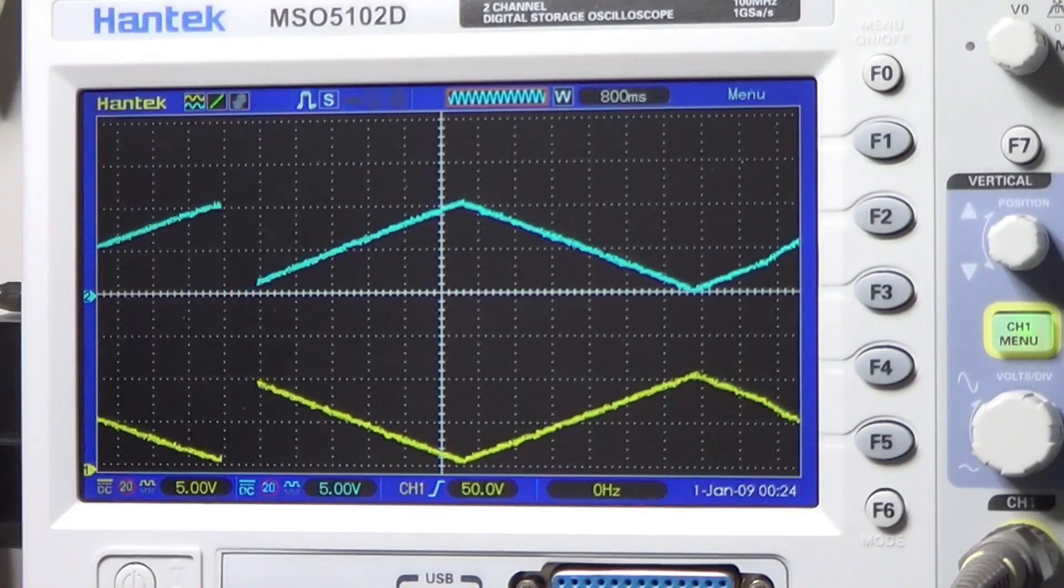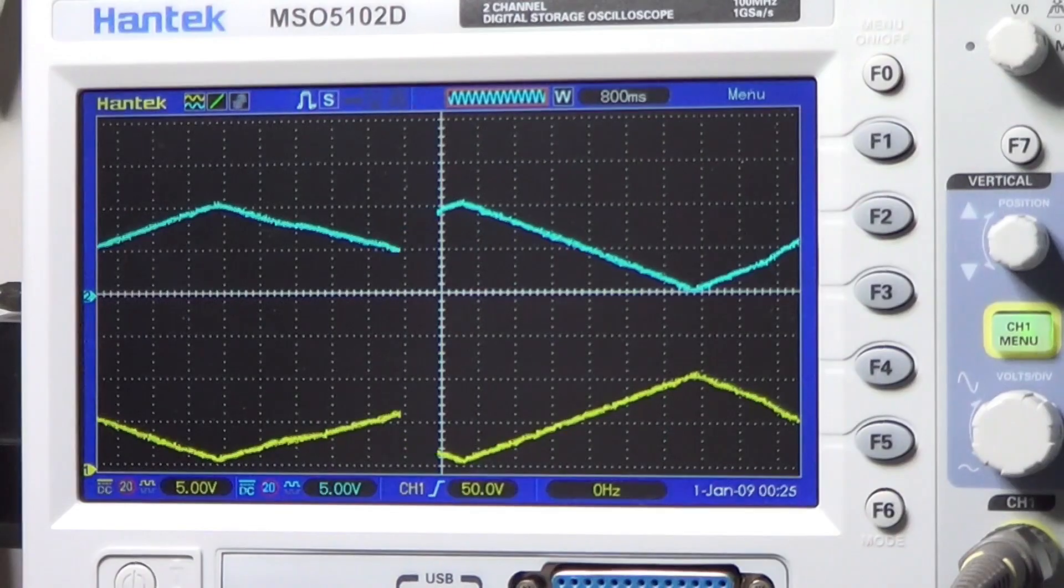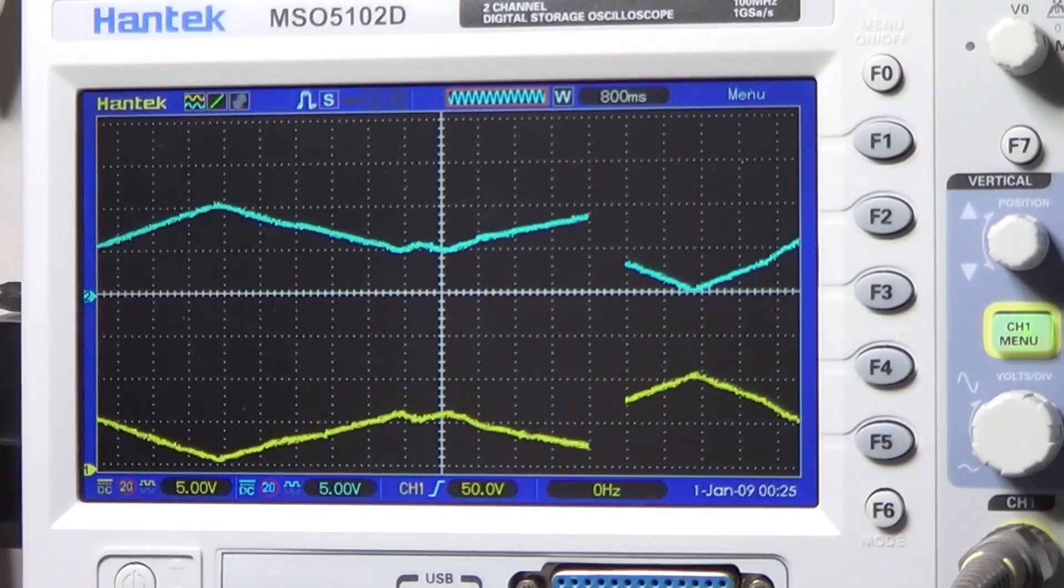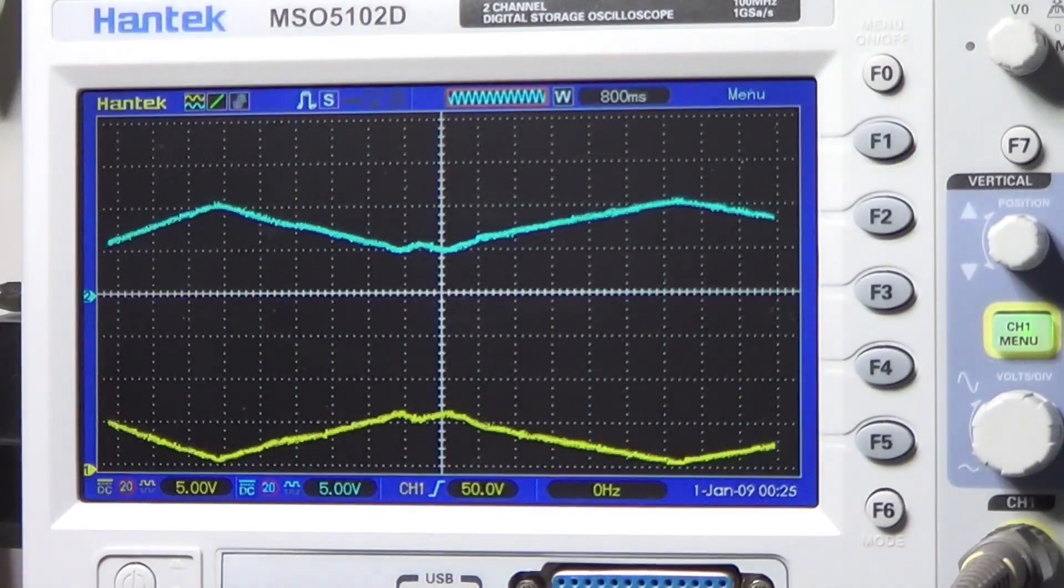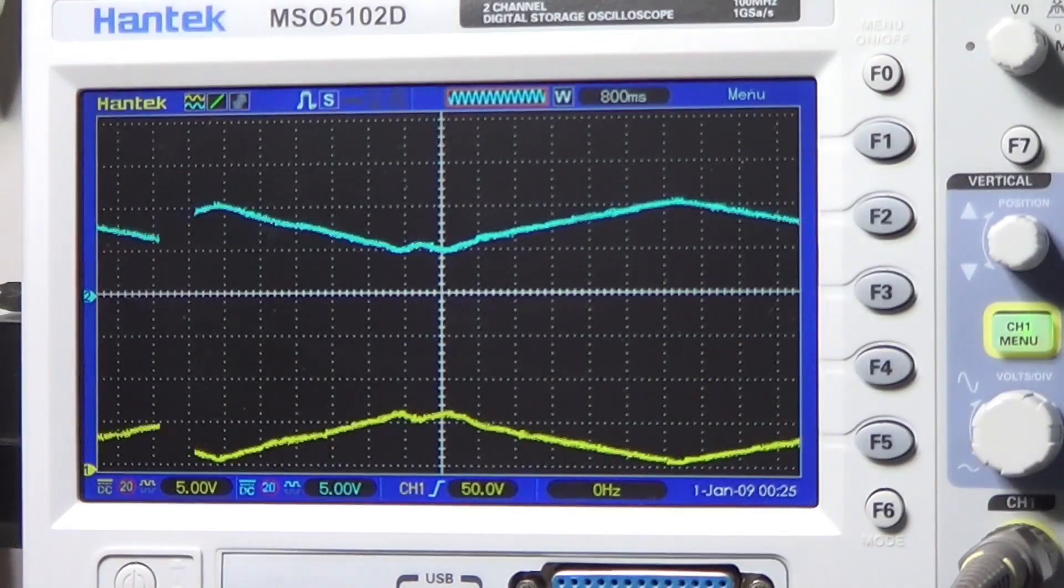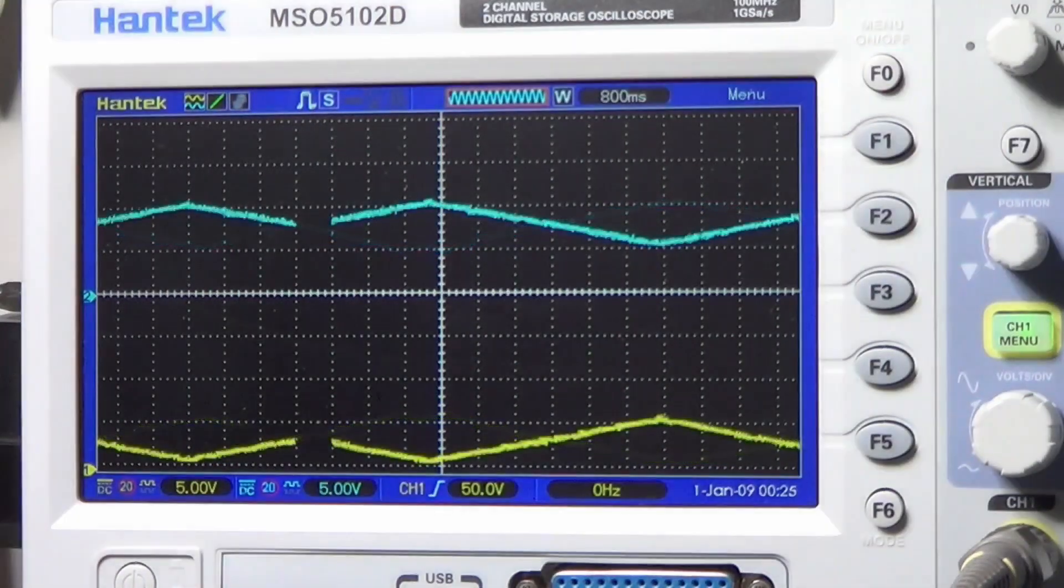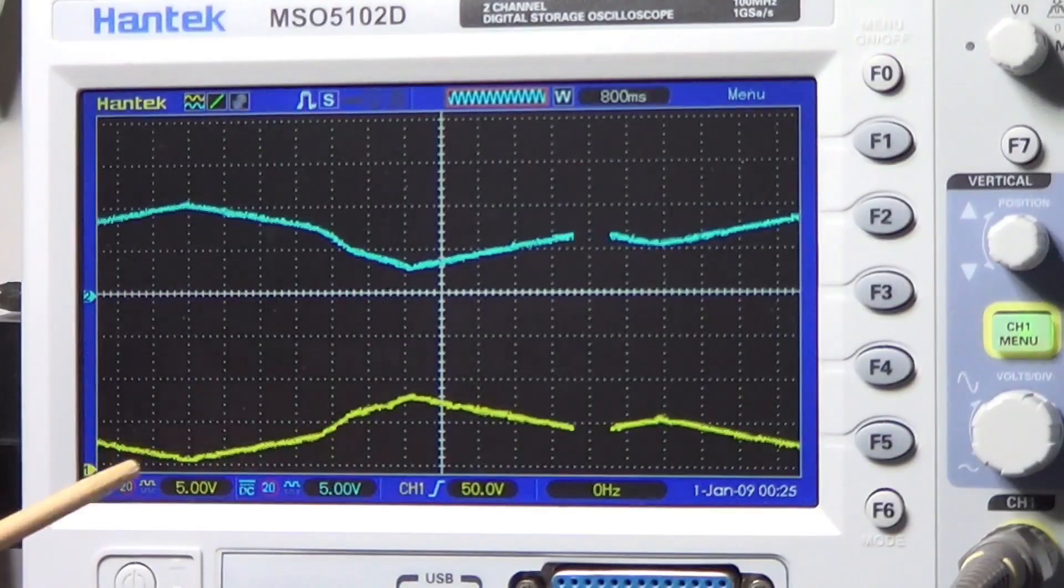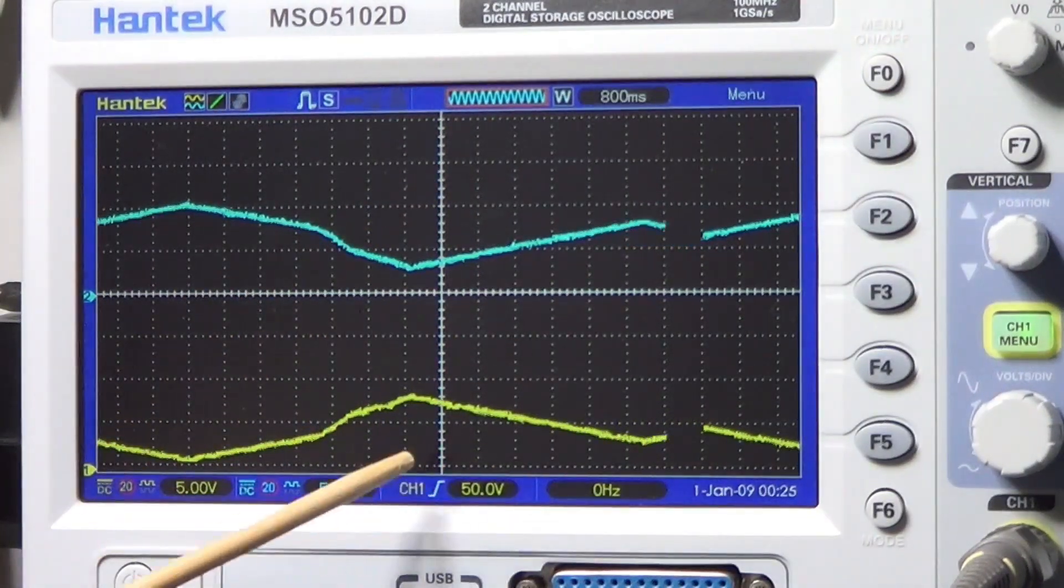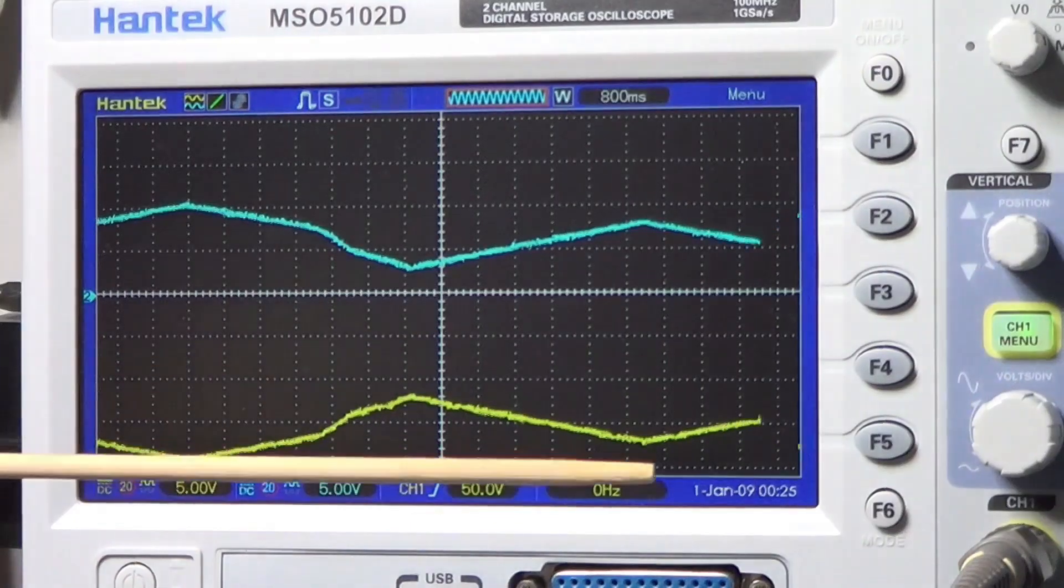Now I'm decreasing the level of the triangular wave so I can check the effect of the offset without saturating the output. So currently we go from 0 to 5V and vice versa. Now I increase the offset. And look what happens. The triangular wave at the output has shifted upward and the inverted output instead has shifted downward.